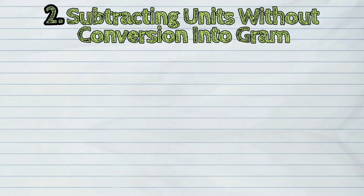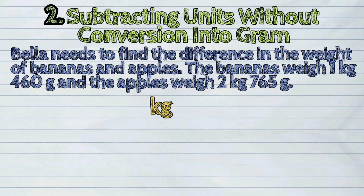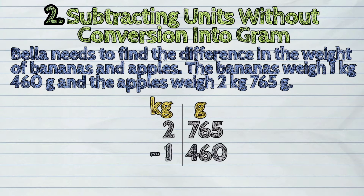The second method is subtracting units without conversion into grams. Let us take the same example. In this method, kilograms and grams are arranged in different columns and subtracted like ordinary numbers. Let us start subtracting.